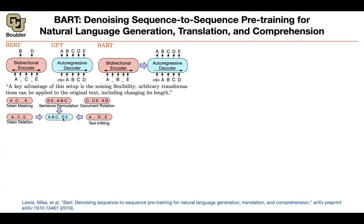What do I mean? You can do the usual — let's say your sentences are like this: A, B, C (sentence ends), D, E (sentence ends). You can do token masking, which is what BERT does: remove B, remove D, replace them with a mask token. You can also do sentence permutation — bring the second sentence before the first.